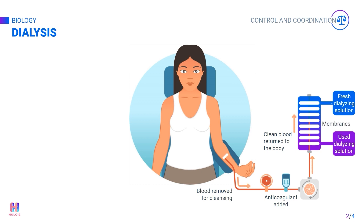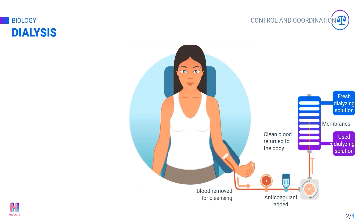The machine contains a clean dialysis fluid that is separated from the unfiltered blood by a partially semi-permeable membrane. Through this membrane, all the toxic and waste substances such as urea move out from the unfiltered blood and go into the dialysis fluid. Once the blood gets filtered, it is then carried back to the blood vessels in the arm.